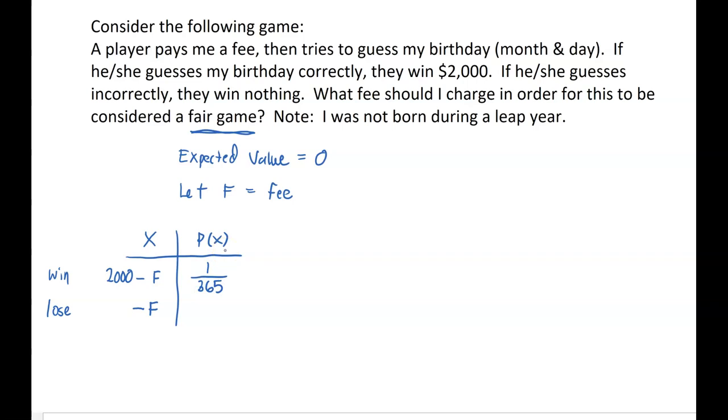So what are the chances the player is gonna lose the game? Well, it would be 364 out of 365, because again, there's 365 different guesses they could make and 364 of them are gonna be wrong because I only have one birthday. So one guess would be correct and 364 guesses would be incorrect. So this is the probability distribution for the game.